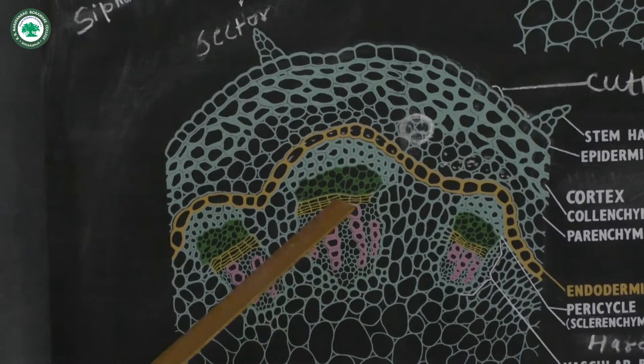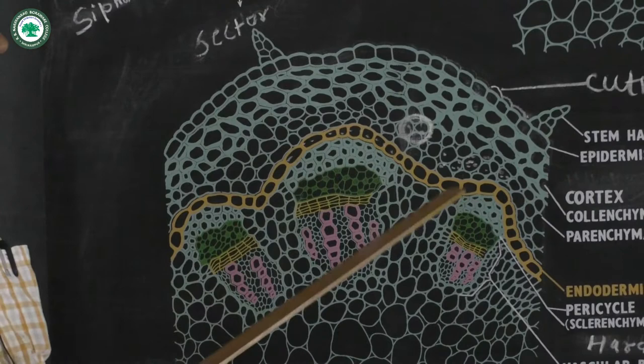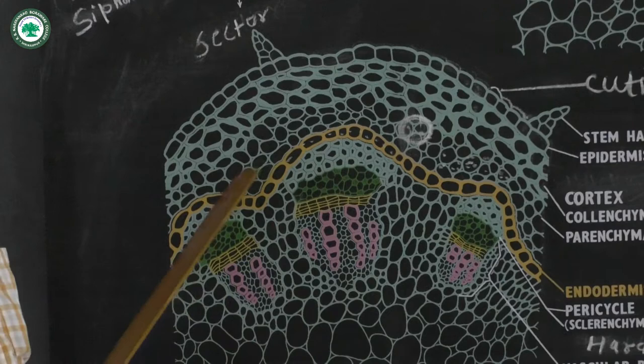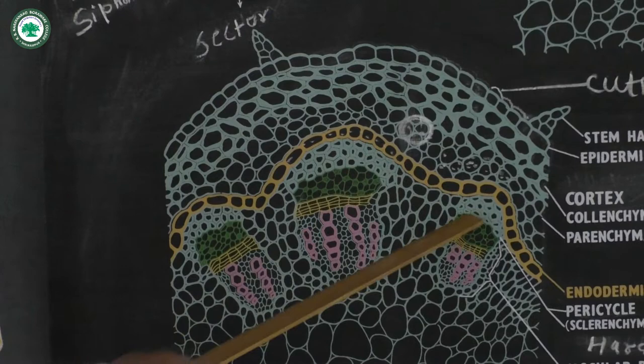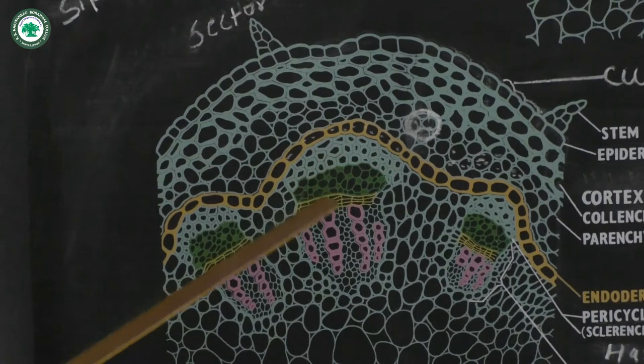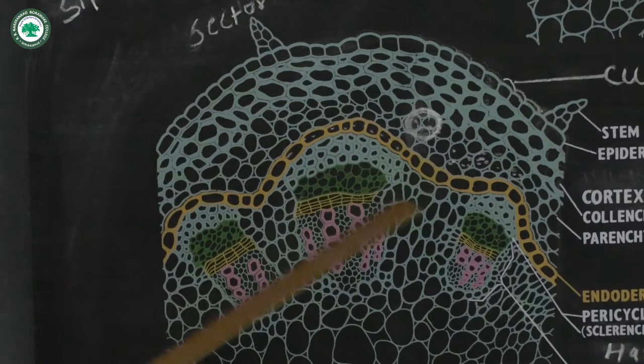Below the endodermis, there is the pericycle. The pericycle occurs in particular patches, not in a regular manner. There is a pericycle on every vascular bundle, just like a cap. Just like a cap, and below the pericycle there is the xylem and phloem, or the vascular bundle.